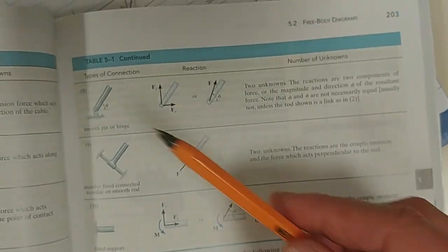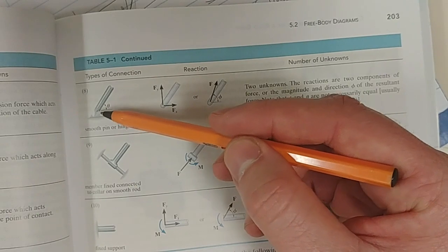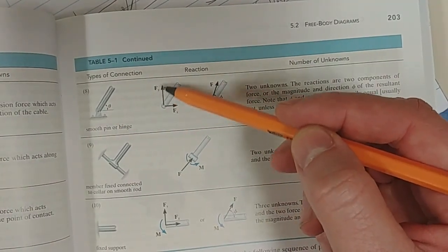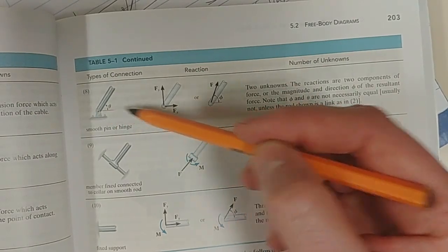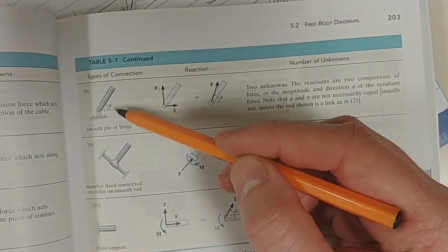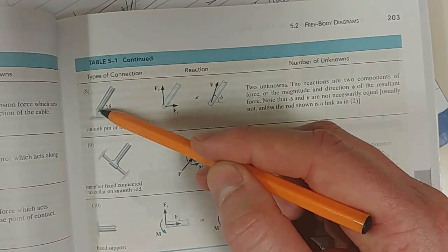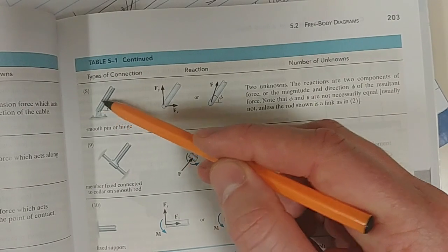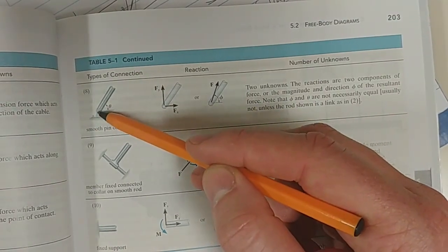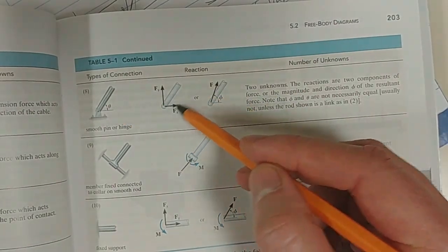The important ones to know are pins. A pin connection. If I apply a force in the vertical, it will resist vertical direction. If I apply a force in the horizontal, it will resist. But if I apply a moment, just go look at a door. A door has a pin, a hinge. That's a pin connection. If I apply a moment on the door, about that point, that pin connection doesn't resist any moment. So I can't draw in the moment here.